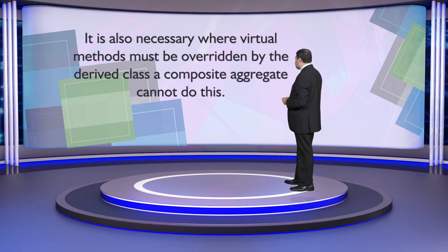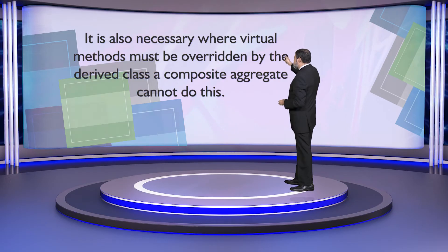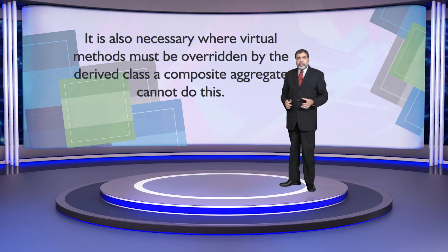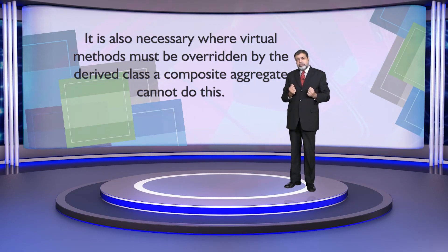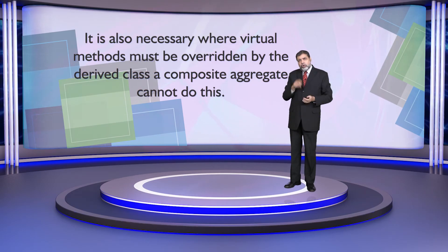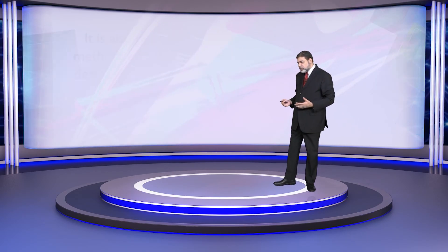In the case of inheritance, virtual methods must be overridden by a derived class. A composite aggregate cannot do that. Those methods can be inherited when using inheritance, and those public methods can be accessed. In composition, you have to write the code explicitly; otherwise polymorphic behavior is not possible.